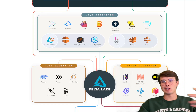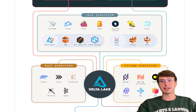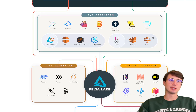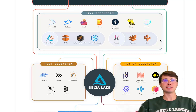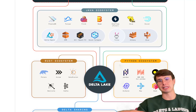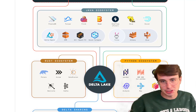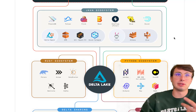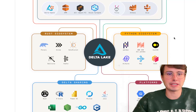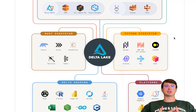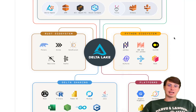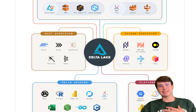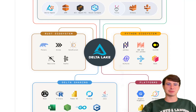Delta Lake is part of the broader ecosystem of the Databricks unified data analytics platform, but it can also be used independently with Apache Spark as an open source project, because at the end of the day Databricks is just a managed Spark offering with tons of bells and whistles. Delta Lake was developed by Databricks to address the inherent challenges of traditional data lakes, such as data inconsistency, lack of schema enforcement, and difficulties in handling concurrent data writes and updates.